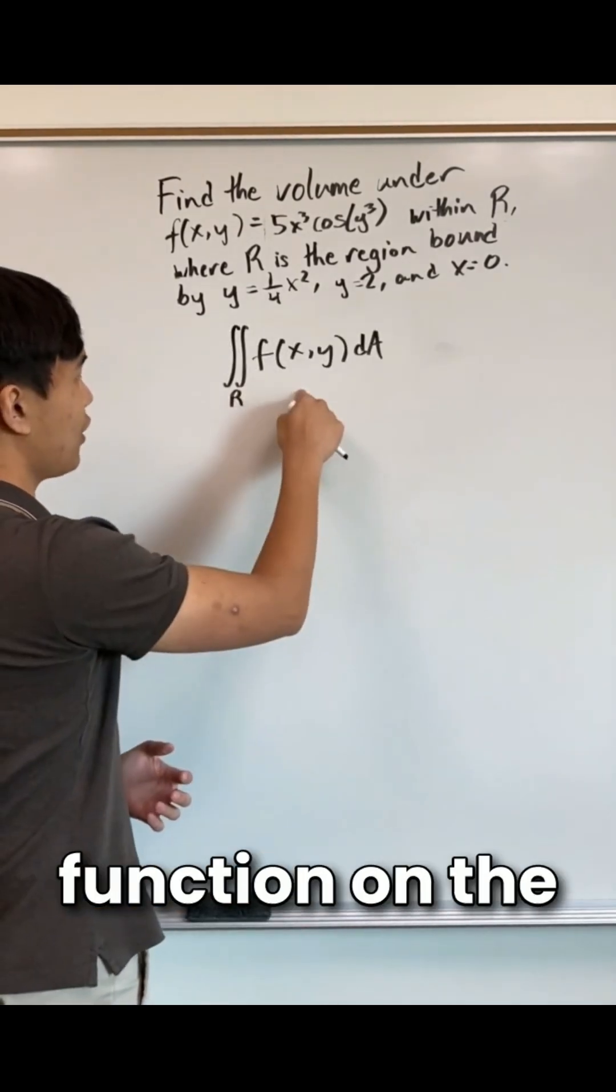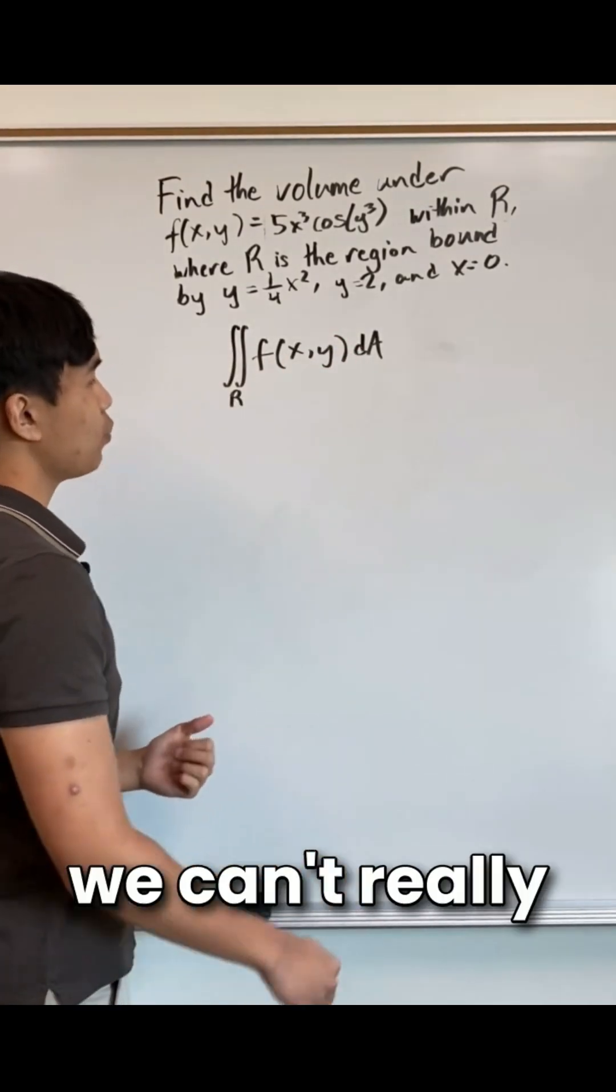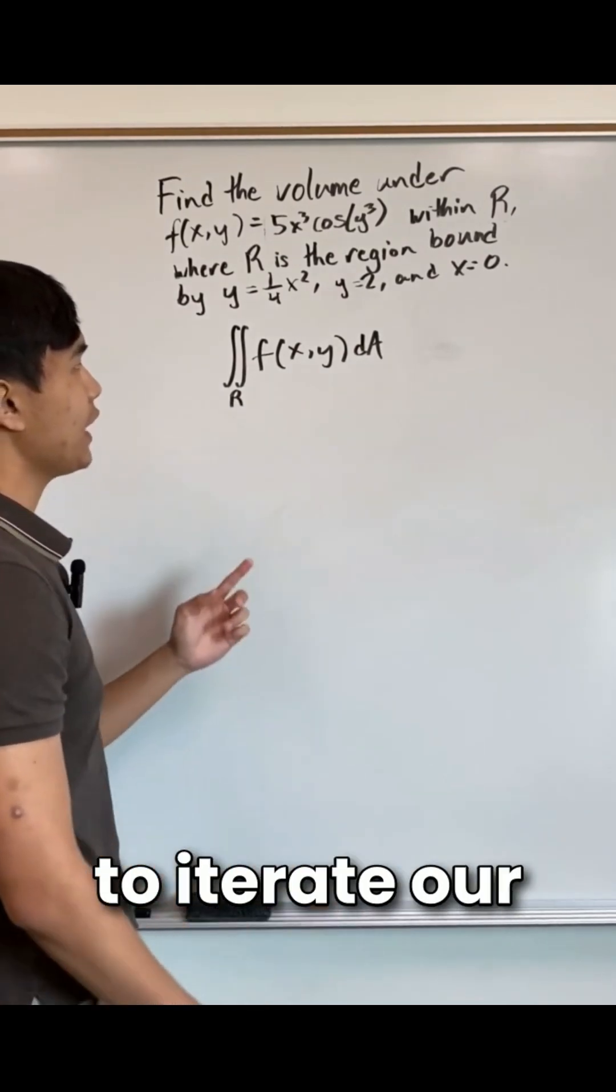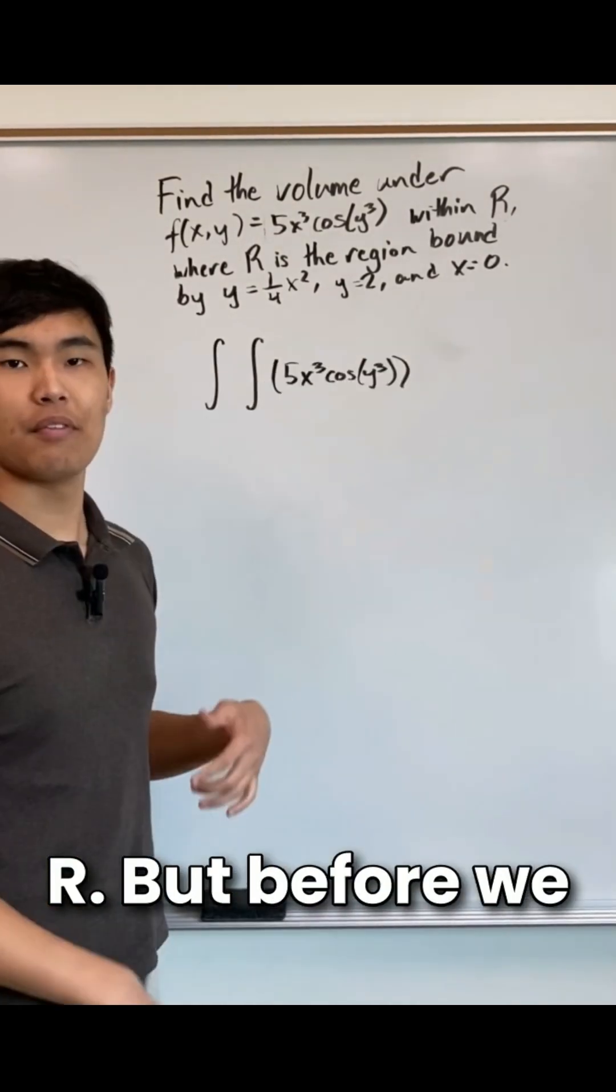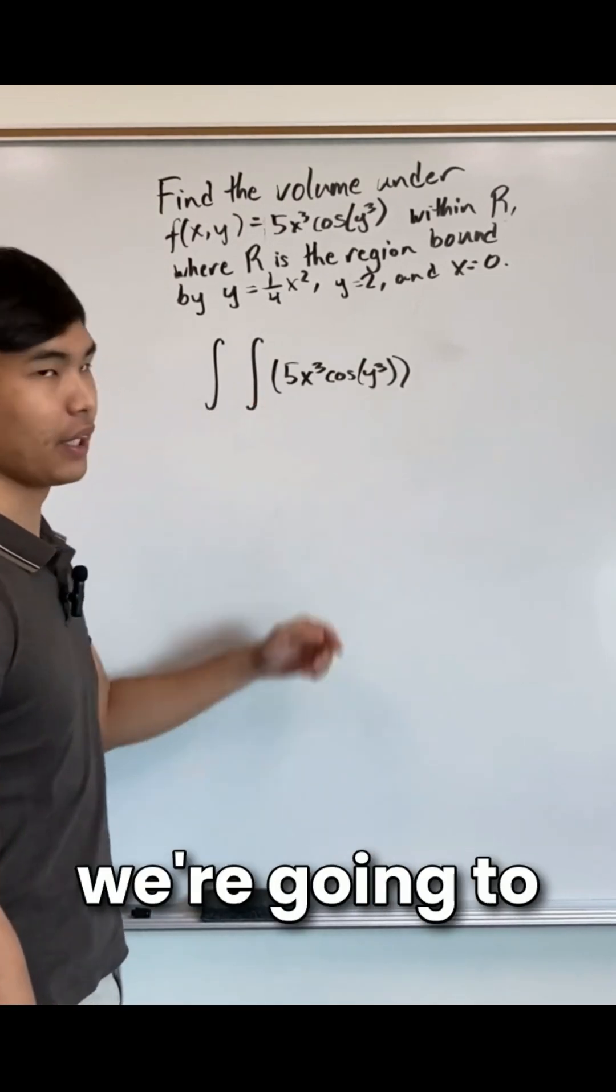To find this volume, we need to integrate our function on the region r. In this form, we can't really do much with the integral, so we need to iterate our bounds of integration using the region r. But before we do that, we need to figure out what order we're going to integrate in.